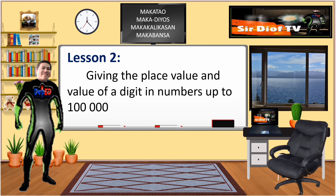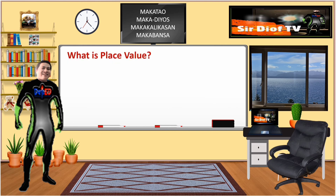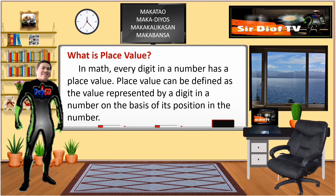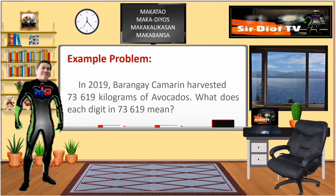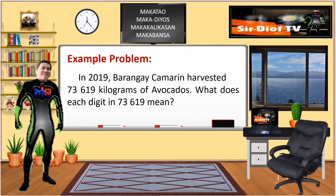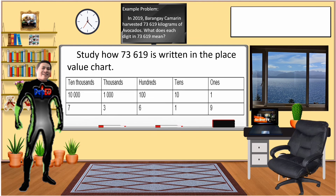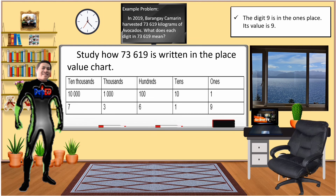Lesson 2: Giving the place value and value of a digit in numbers up to 100,000. What is place value? In math, every digit in a number has a place value. Place value can be defined as the value represented by a digit in a number on the basis of its position in the number. Example problem: In 2019, Barangay Kamran harvested 73,619 kilograms of avocados. What does each digit in 73,619 mean? Study how 73,619 is written in the place value chart.